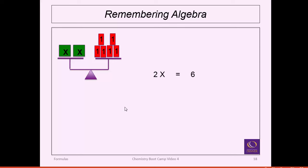For multiplication and division: same concept. If two x's balance exactly six things, then 2x equals 6. To find what one x weighs, cut it in half — which means dividing by 2. The operation between 2 and x is multiplication, so the opposite is division. Divide both sides by 2: the 2's cancel and you're left with x equals 3. Opposite operations on both sides. If x over 4 equals 5, the operation is division, so the opposite is multiplication — multiply both sides by 4, leaving x equals 20.